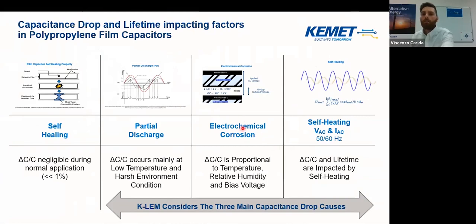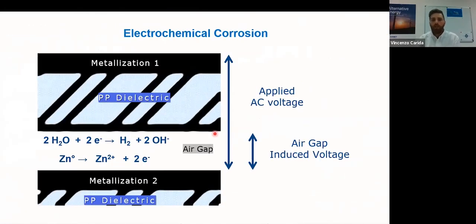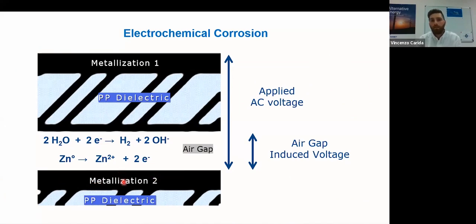The other capacitance drop mechanism is electrochemical corrosion. Electrochemical corrosion is due to the simultaneous presence of water and AC applied voltage. When water is present in capacitor windings, an electrochemical cell is formed, and with the voltage applied, the metallized layer could corrode in accordance with this reaction. This reaction rate is proportional to temperature, proportional to the AC voltage applied level, and also proportional to the relative humidity level.